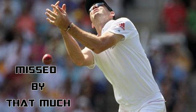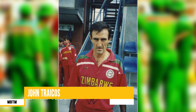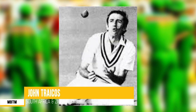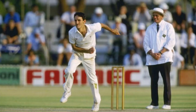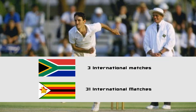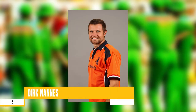First, let's take a look at the 'just missed by that much' segment. John Tricos, an off spinner, made his test debut in 1970 for South Africa against Australia. After three tests, however, he moved to Zimbabwe, where he made his ODI debut in 1983 and played till the 1990s.